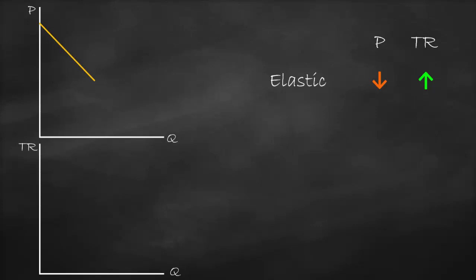When price elasticity of demand is greater than one, the product is elastic. What will happen to our total revenue curve? It will go up. Then we have unit elastic — what do we mean by unit elastic? Any change in price will not affect total revenue.